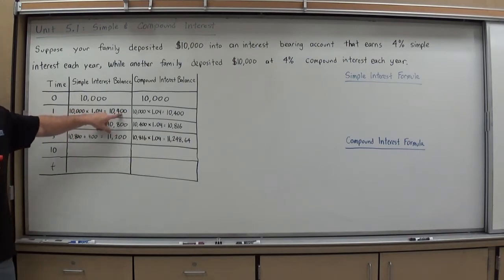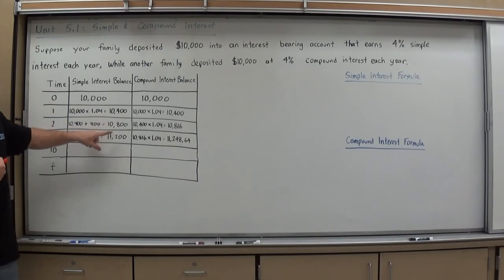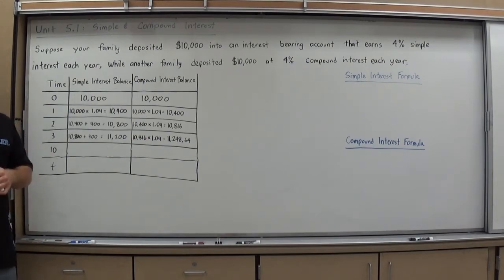The way a simple interest account works is they don't take that interest and put it back into your account balance. It is technically there, but it's not earning any more interest. That same amount of interest, that 4% of $10,000, gets added in to the new balance every year. So once you've calculated one year's interest, you know what it's going to be every year until the principal changes.